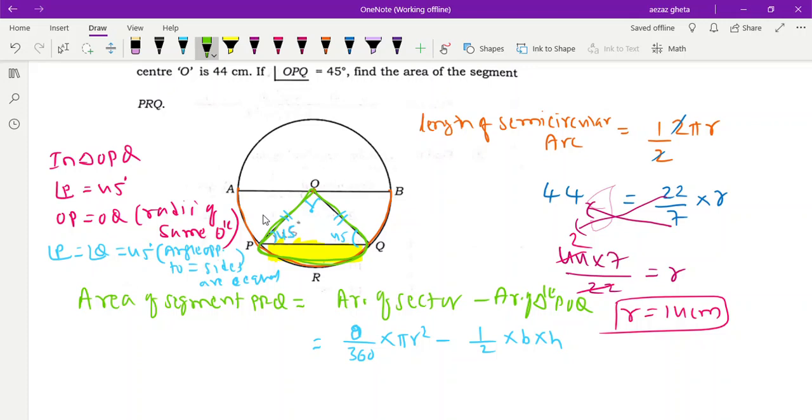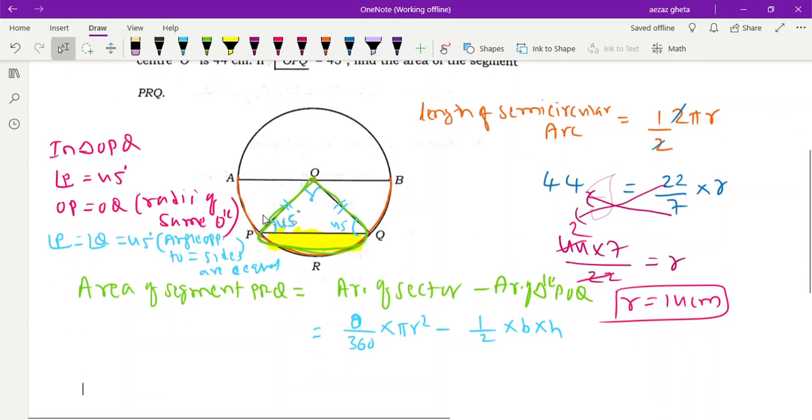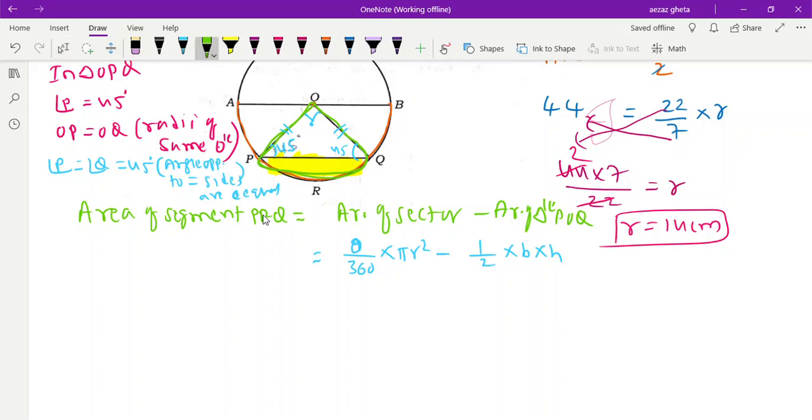Sum of the angles of a triangle will be 180 degrees. So angle P plus angle O plus angle Q is equal to 180. P is 45, Q is also 45. 45 plus 45 is 90, plus O is equal to 180. So angle O is equal to 180 minus 90, which is 90 degrees.